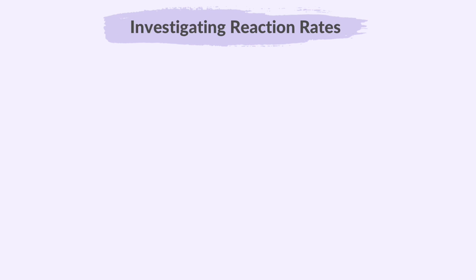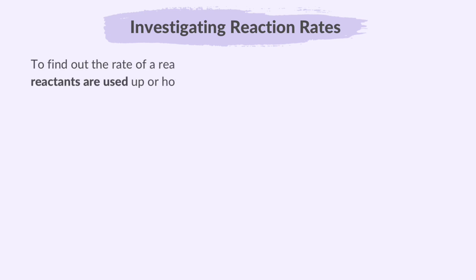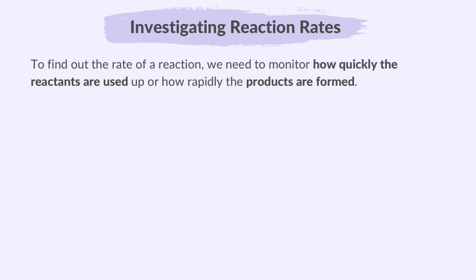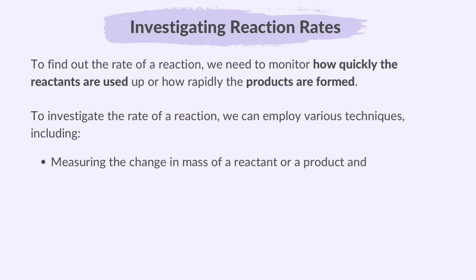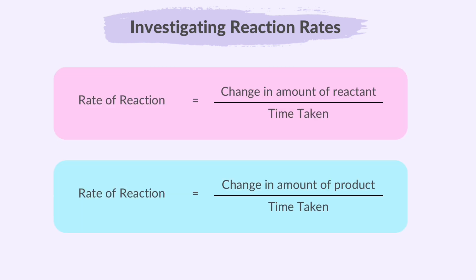Next, we are going to describe practical methods for investigating the rate of a reaction. To find out the rate of a reaction, we need to monitor how quickly the reactants are used up or how rapidly the products are formed. We can employ various techniques including measuring the change in mass of a reactant or product and measuring the amount of gas formed. The rate of reaction can be calculated by determining how much reactant was used or how much product was formed over a specific period of time.